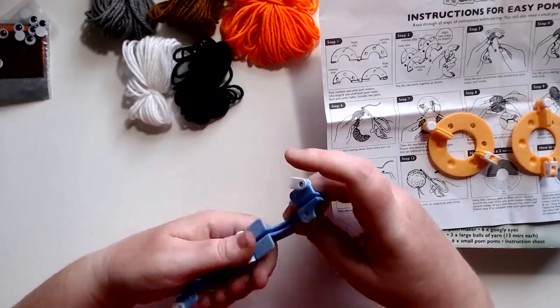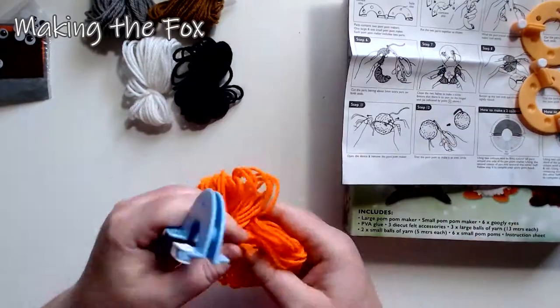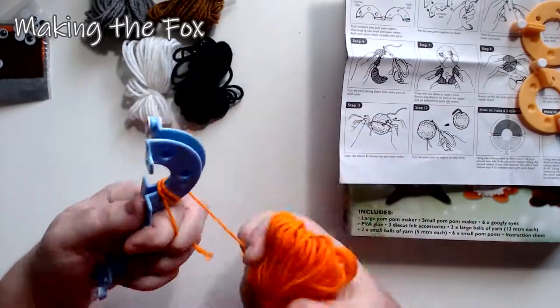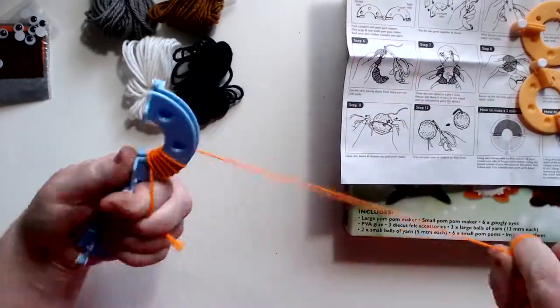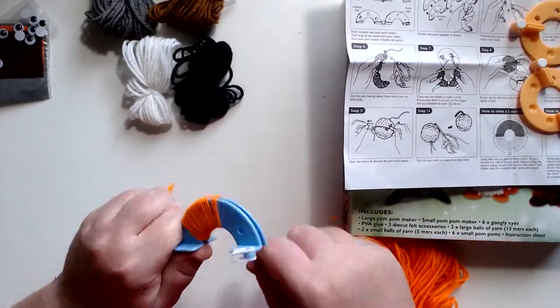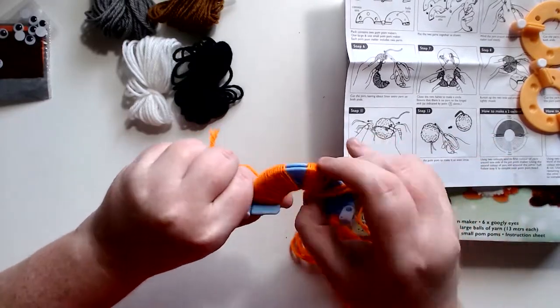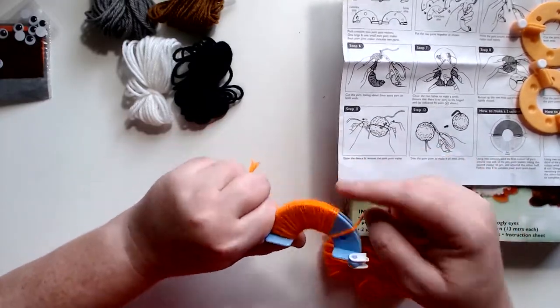So these little pom-pom makers you sit them next to each other like that, and then you take your wool. I'm gonna do the fox first, and then you wrap it around holding the two halves together. What that does is it holds all of the wool together but also gives you a space so that you can tie the strand of string around and you can also cut the pom-pom itself.